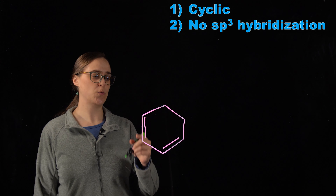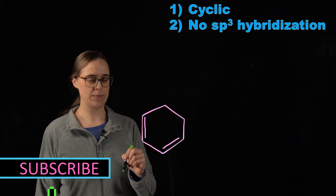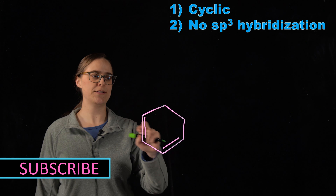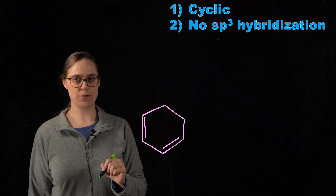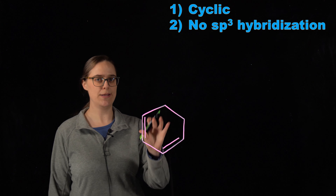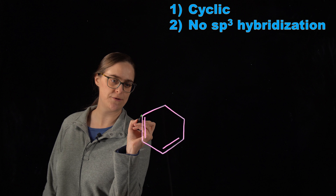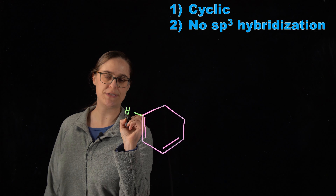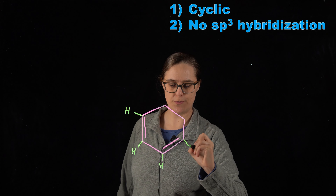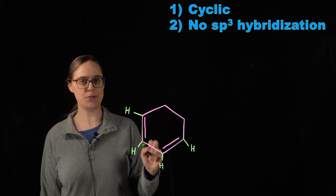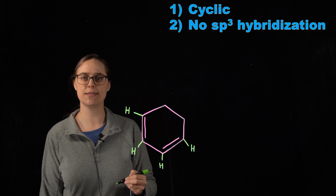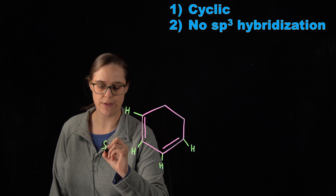Now let's look at 1,3-cyclopentadiene. It looks fairly similar to benzene, but we are missing a double bond and have two extra hydrogens. Four of these carbons each have one hydrogen bonded to them — each bonded to three other atoms with no lone pairs — so these are all sp2 hybridized. That's what we want in order to have the chance of aromaticity.